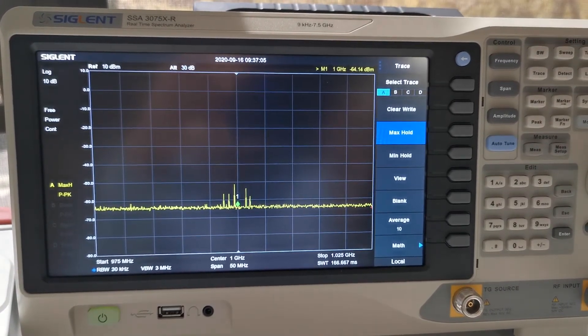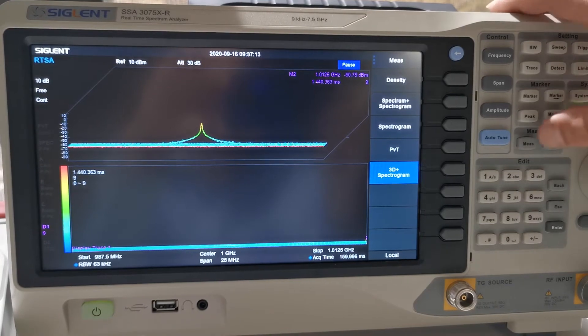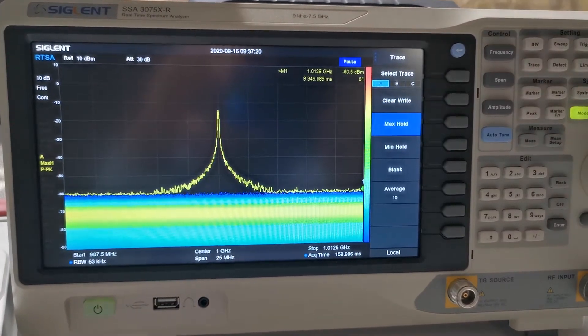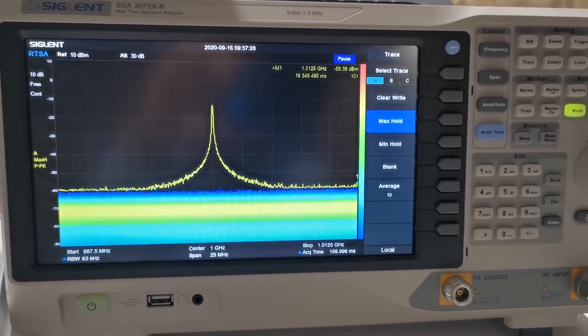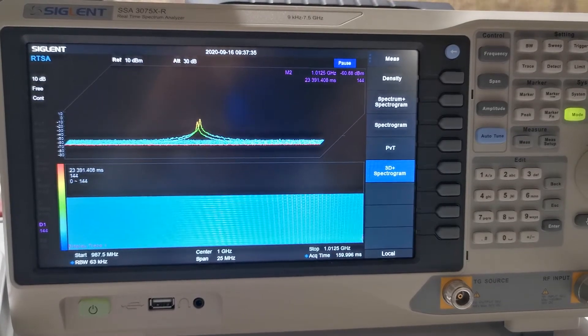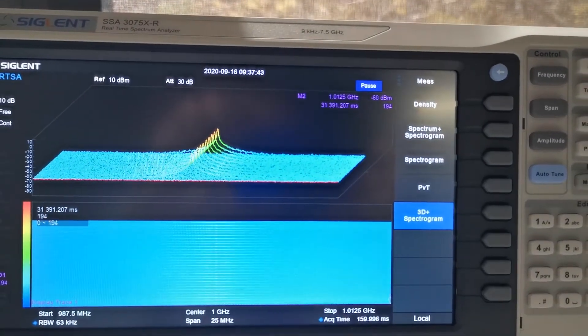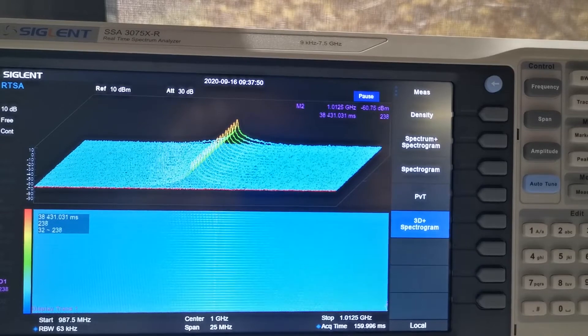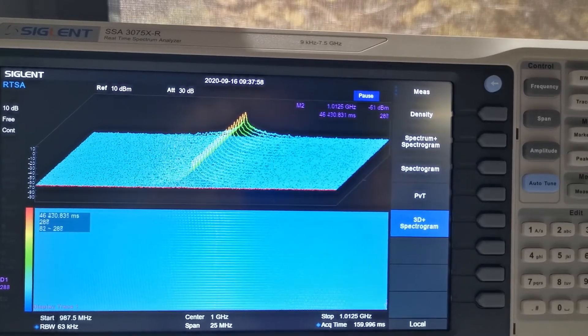Now it is time for us to use the RTSA. So we press mode, RTSA. Okay, we can see something here. And maybe we change that to density. And by the way, we can also have the max hold in the density mode. You can see, you can capture the spectrum in a second. And you can still see the real time spectrum is flashing. Let's change that to 3D spectrogram. You can see the pulse very clearly. You can also see the pulses in the waterfall diagram.